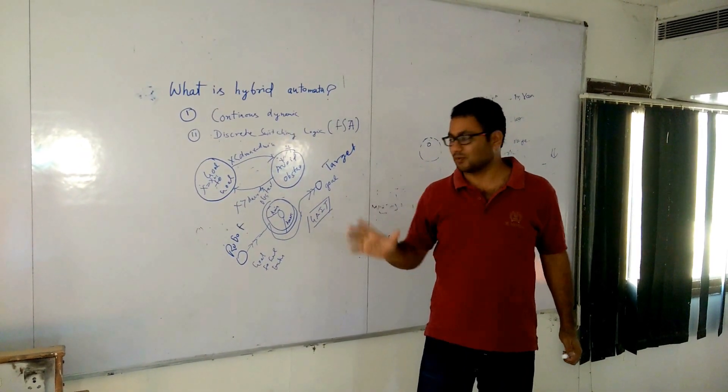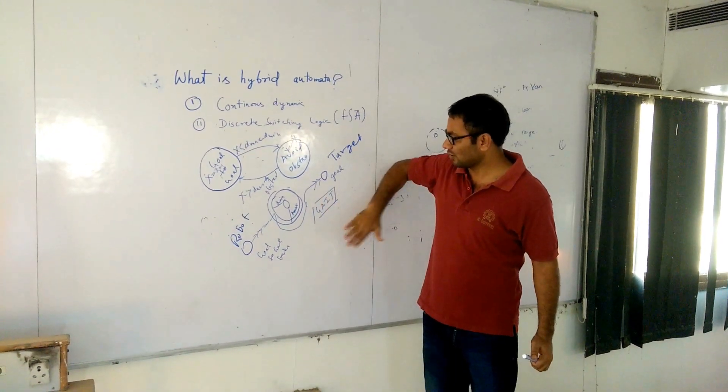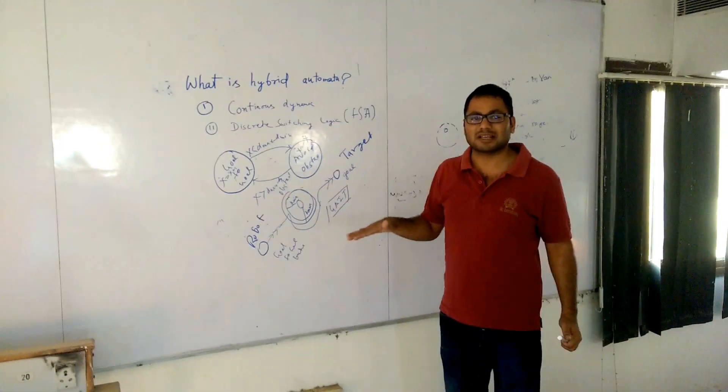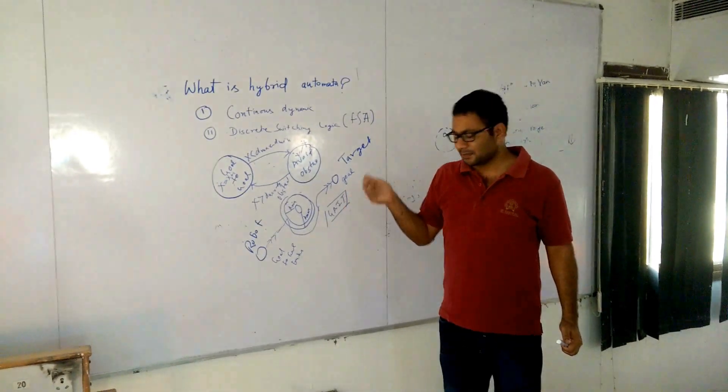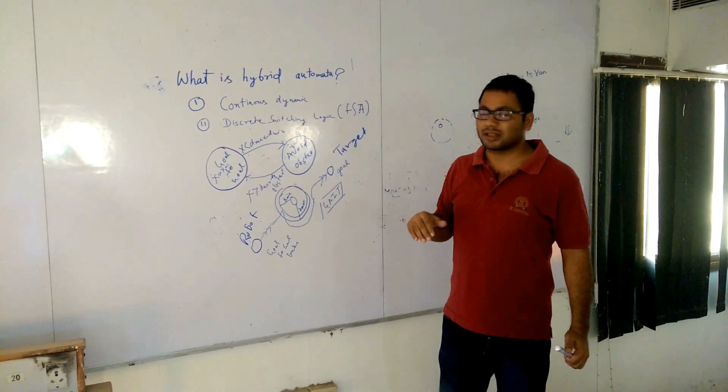So this application, hybrid automata can be used for gait behavior, can be designed for any real-time application like negotiation, as well as gear shifting of the car or buses. Thank you.